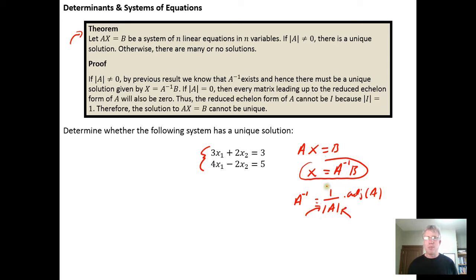In other words, we need A to be non-singular. The determinant can't be equal to zero. So all we need to do to check whether a system has a unique solution or not is to calculate the determinant.